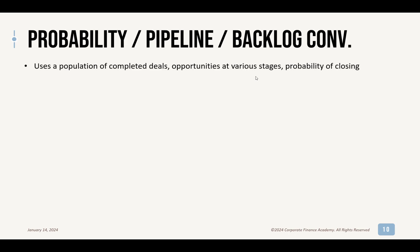Probability, pipeline, and backlog conversion: let's do a really simple example. Say it's your first month ever in business — you don't have any completed orders. You have three opportunities, all for $100. The sales team places the first at a 100% chance, the second at 50%, and the third at 25%. You effectively create a weighted average to assume what your forecast is going to be. The first $100 is worth $100, the second worth $50, the third worth $25 — add those up and your forecast is $175. That's how this works in a very simplified way.